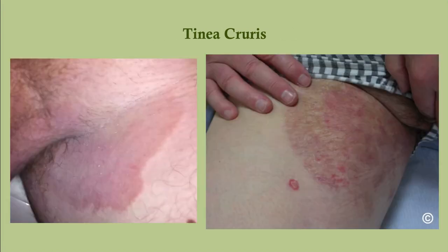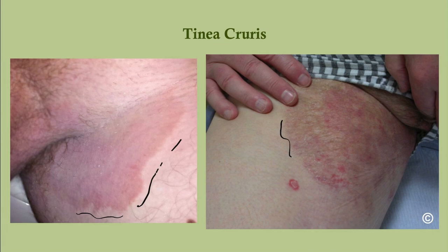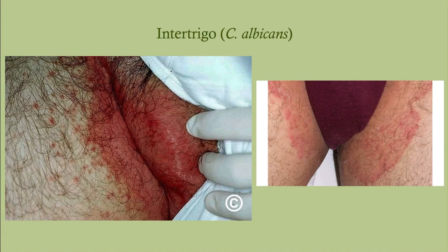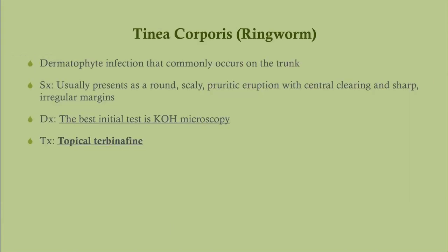In tinea cruris you can see indistinct margins, and as lesions resolve they may leave hyperpigmentation — this recurrence on top of hyperpigmentation is classic for tinea cruris. Intertrigo, by contrast, appears angrier with peripheral satellite lesions, which are the giveaway for a candidal infection. KOH scraping will give you the definitive answer if there's any doubt.